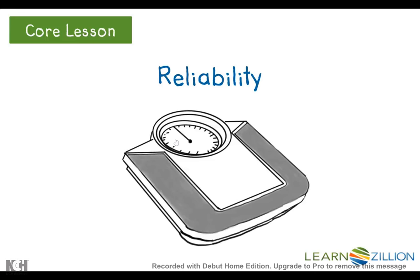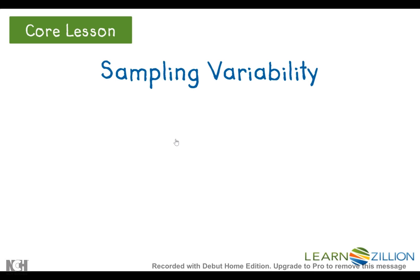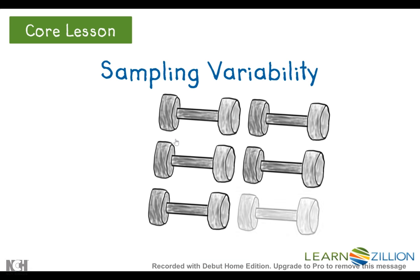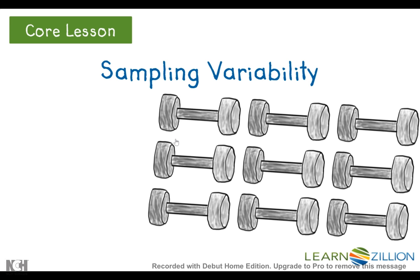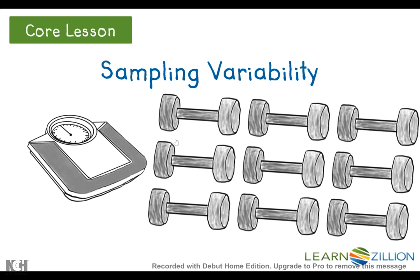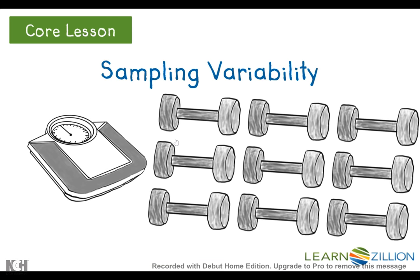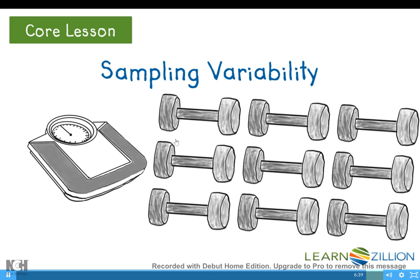Reliability focuses on the tool being used. Sampling variability is the concept that more than one sample of the same size from the same population could yield different results. For example, if we weigh nine samples of 10-pound dumbbells and consistently get the same average weight, there isn't much variability. In our problem, a different sample of 1,000 teenage drivers could give a different percentage. Variability focuses on the samples being used.